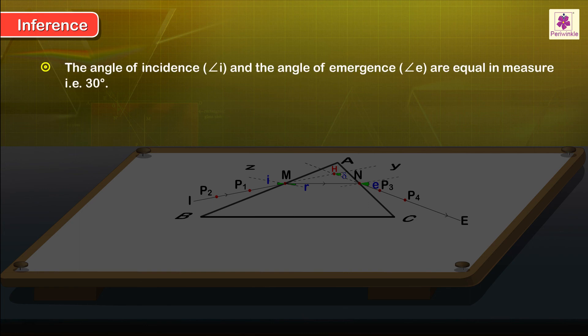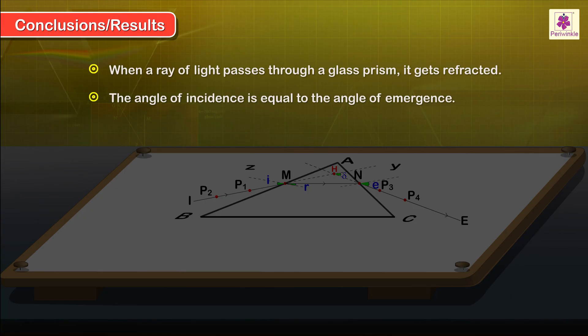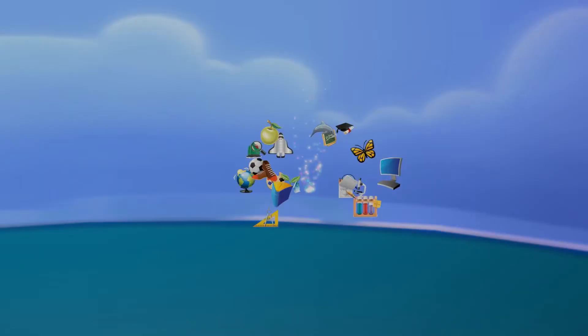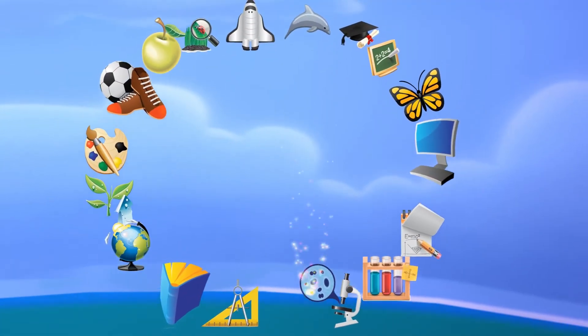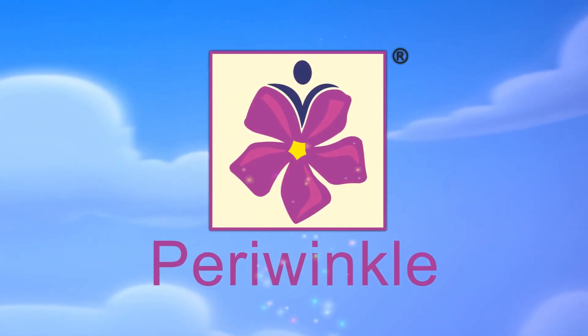Inference: The angle of incidence i and the angle of emergence e are equal in measure, that is, 30 degrees. Conclusions or results.